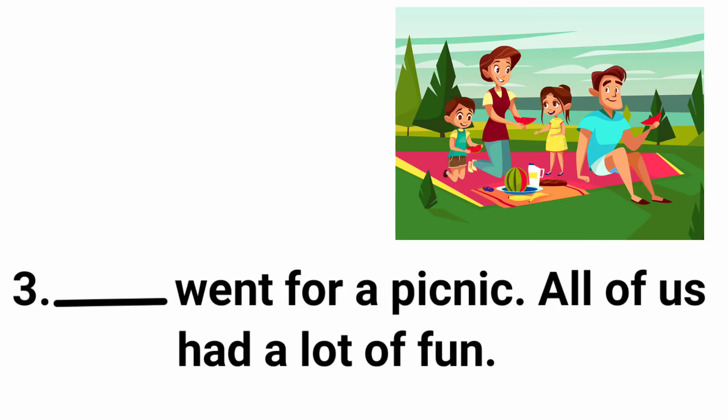Look at the next sentence: dash went for a picnic, all of us had a lot of fun. Here we need to use we, because the speaker is talking about himself and some other people. So here we use we. We went for a picnic, all of us had a lot of fun.